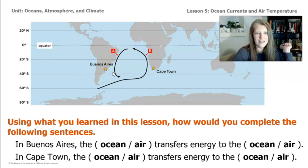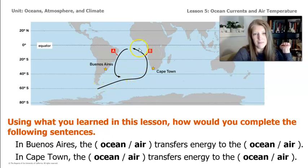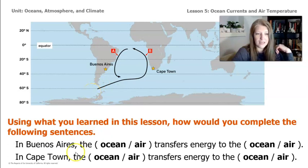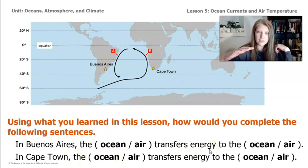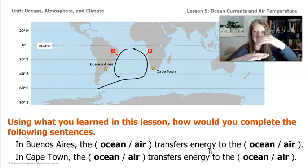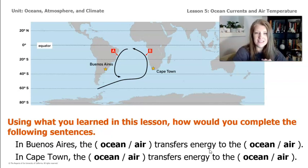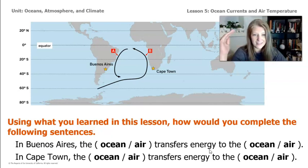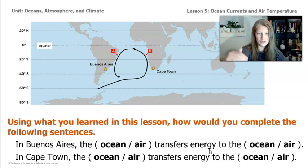Cape Town is the opposite. Cape Town has a cold ocean current, current B, moving down from the pole. So at Cape Town, the ocean is colder and the air is warmer than the ocean. As the cold ocean moves past Cape Town, energy from the warmer air transfers to the cold ocean. In Cape Town, the air transfers energy to the ocean.